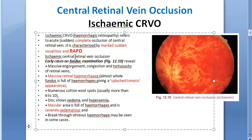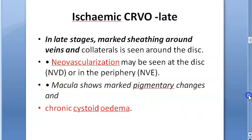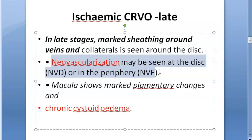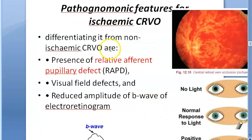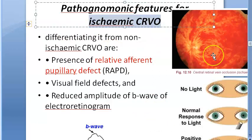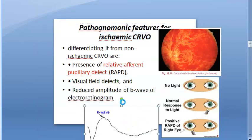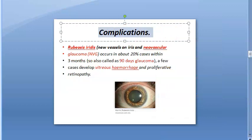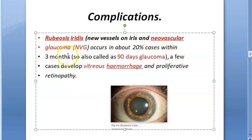Some non-ischemic cases can progress to ischemic. Ischemic CRVO shows complete occlusion of the central retinal vein — hemorrhagic retinopathy — with sudden painless loss of vision and RAPD. Early features include massive retinal hemorrhage with splashed tomato appearance, numerous cotton wool spots, disc edema and hyperemia, macular hemorrhage with severe edema, and vitreous hemorrhage. Late stage shows neovascularization — NVD, NVE — and chronic cystoid macular edema.